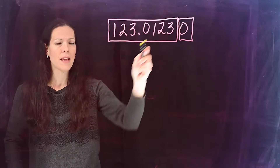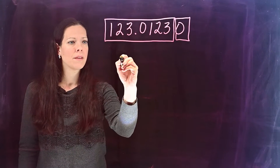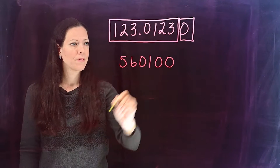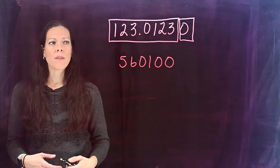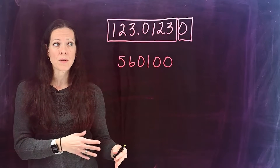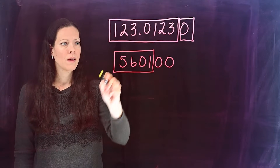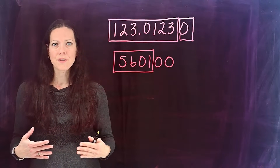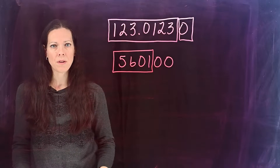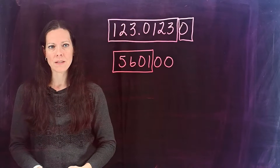Everything now within these boxes will be considered significant, so this number would have 1, 2, 3, 4, 5, 6, 7, 8 significant digits. Looking at another example, I'm going to begin with boxing the leftmost non-zero digit and including everything to the rightmost non-zero digit within the box. There is no dot, there is no decimal place present, so I'm not going to box the end zeros — they would not be considered significant. This number would have 4 significant digits.